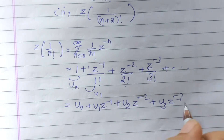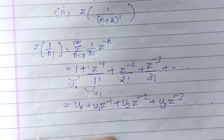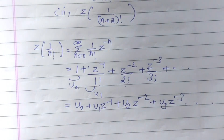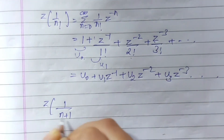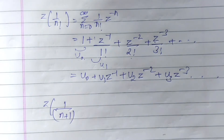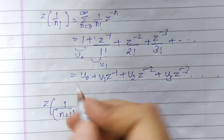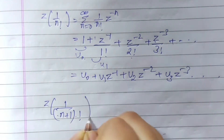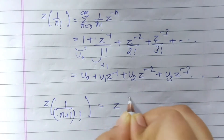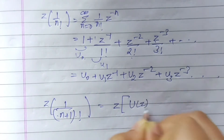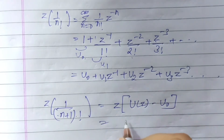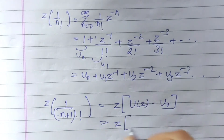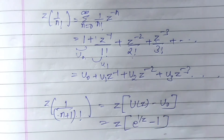So 1 divided by 1 factorial, 2 divided by 2 factorial — those will be your u values, u1 z to the power minus 1, u2 z to the power minus 2, and so on. Now by using the shifting property for one unit to the right, Z of 1 divided by (n+1) factorial equals Z of u(z) minus u0, which equals Z of e to the power 1 by z, minus 1.